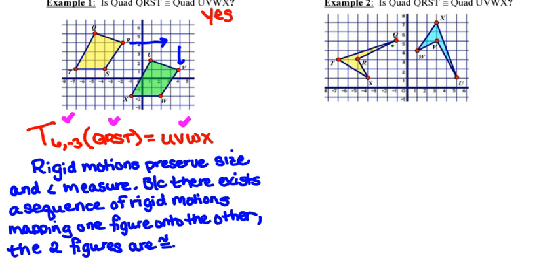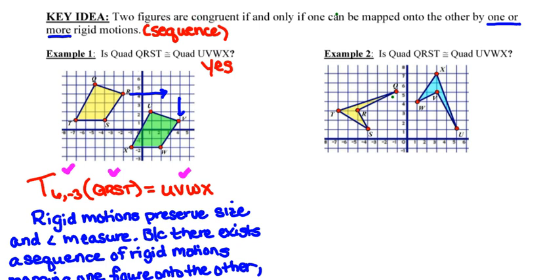All right, let me scroll up just a little bit and we'll take a look at example two. This one, very similar. Is quadrilateral QRST congruent to quadrilateral UVWX? In other words, is there a sequence of rigid motions that will map either the yellow one onto the blue or the blue one onto the yellow? And the answer to that is also yes. We can rotate the yellow onto the blue by a 90 degrees clockwise rotation. We can also rotate the blue onto the yellow by a 90 degrees counterclockwise rotation. The important thing is through that sequence of rigid motions, we can map one onto the other. So the answer to this is yes.